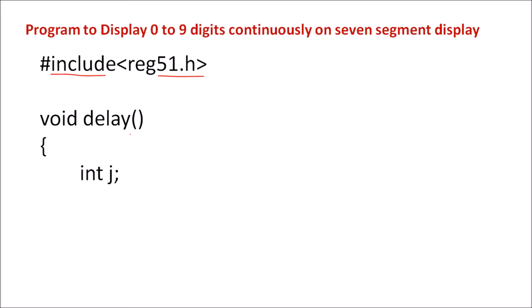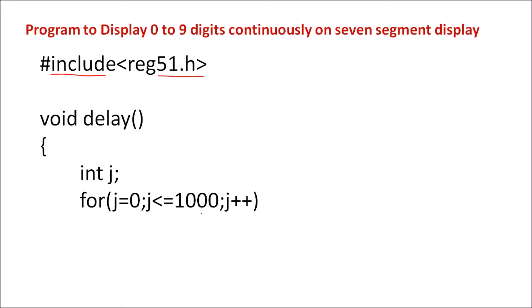An integer j is declared, and here a for loop is used. We can increase or decrease this count as per our delay requirement. This function will generate a delay.